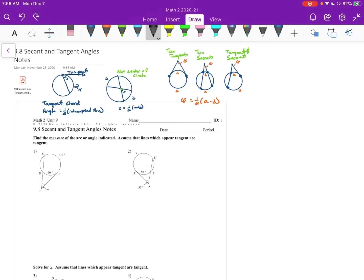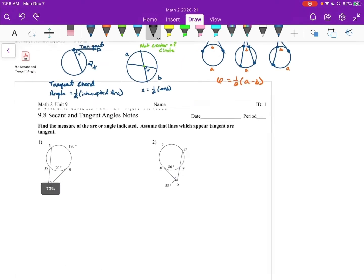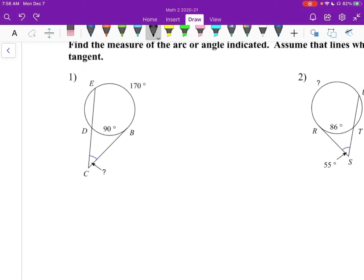Okay, 9.8 secant and tangent angles. So starting off, we need a definition of secant. I don't know that I've given that to you yet. A secant is like a chord that also leaves the circle. So we've got a chord here. And the secant would be if we talked about this whole thing. That would be a secant. So a secant is like an extended chord.